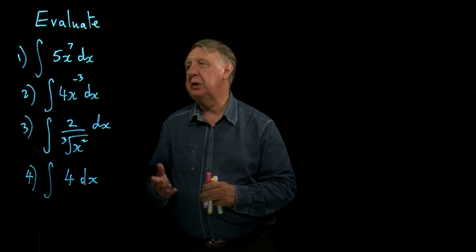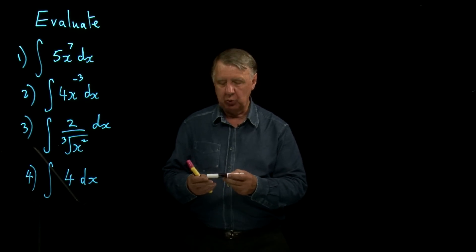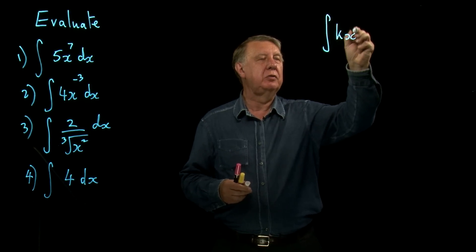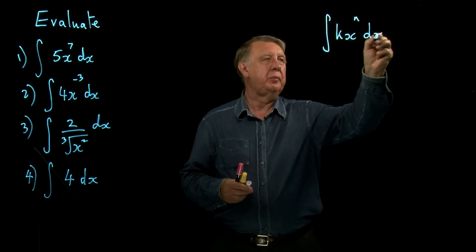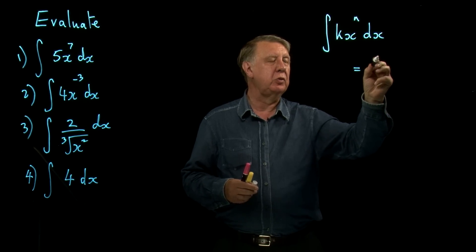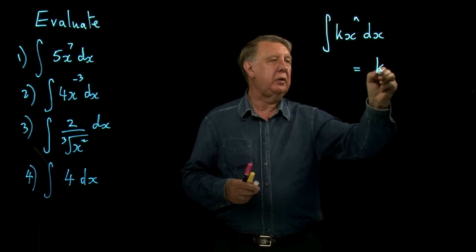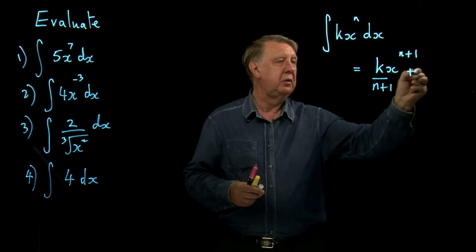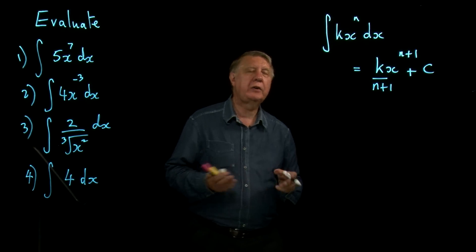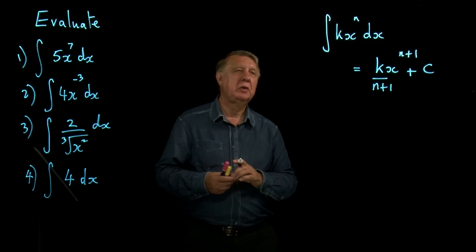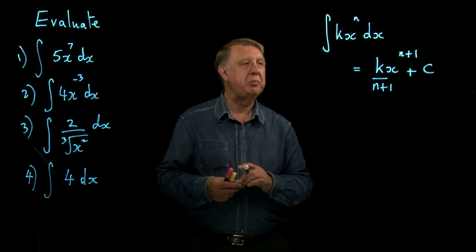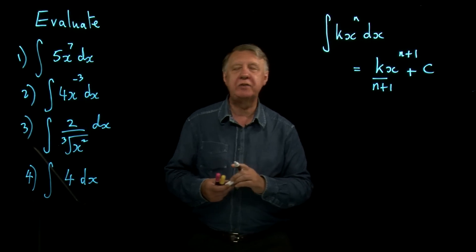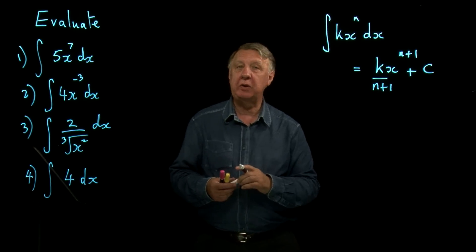Right, well remember last lesson we looked at the basic rule for integrating kx to the n. So let's write it down to remind ourselves and then look at some of the problems with using the rule. So kx to the n plus 1 over n plus 1 plus c. Now like all rules you have to beware of the problems that might crop up. And usually it's to do with powers and the indices and your ability to manipulate fractions.